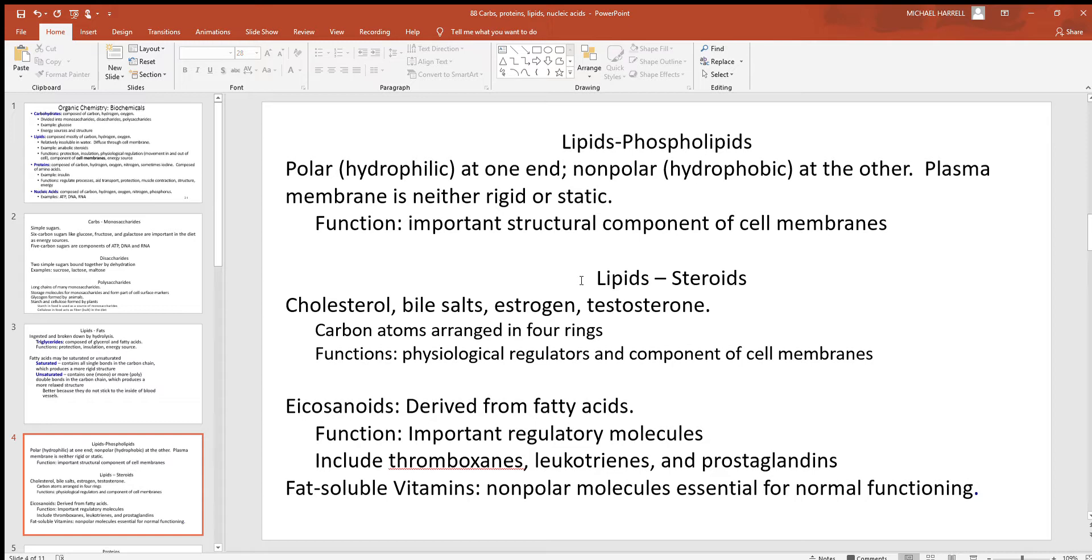Look at another group of lipids, steroids here. A lot of people think steroids are just something to make your muscles grow. No, that's testosterone, that's just one example of a steroid in the body. Steroids are carbon atoms arranged into a characteristic four-ring structure. So cholesterol, bile salts, estrogen, and testosterone are just a few of the common examples. These have some important functions: physiological regulators, these are a lot of hormones and such, and components of cell membranes too. Down here you can see some of those like fat-soluble vitamins. We'll get to more of those further along in other chapters.